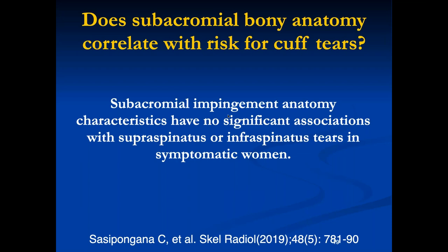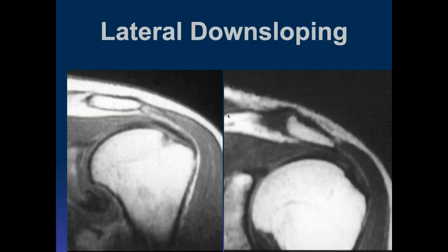I don't see acromioplasty nearly as commonly as I did 15 years ago, though it's still occasionally warranted. For lateral downsloping, the normal acromion should be horizontal; mild lateral downsloping is very common and not necessarily associated with symptoms. What I think is important is looking at the cortical surface: if it's nice, smooth, and uniform, you probably don't have significant mechanical problems—so it's unlikely to cause symptoms. If you see osteophytes and irregularity, then it can be a cause of symptoms.